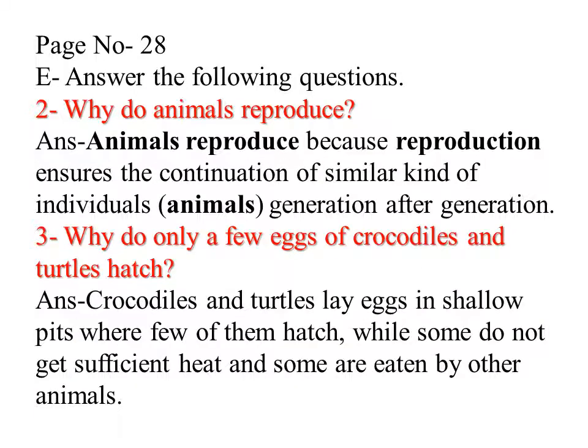Question number 2: Why do animals reproduce? Animals reproduce because reproduction ensures the continuation of similar kind of individuals — meaning animal generations after generation. Question number 3: Why do only a few eggs of crocodile and turtles hatch? Crocodiles and turtles lay eggs in shallow pits where few of them hatch, while some do not get sufficient heat and some are eaten by other animals.